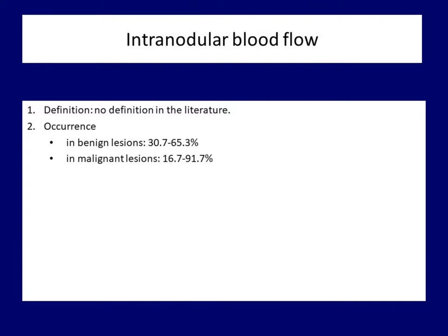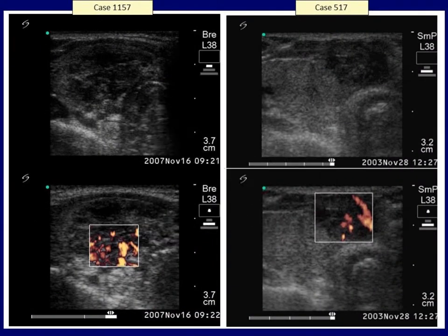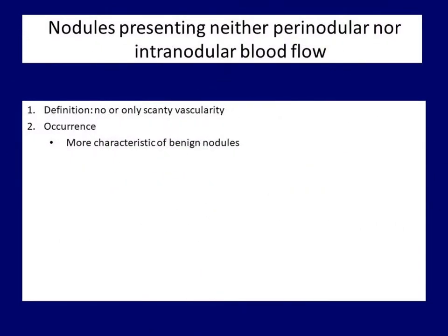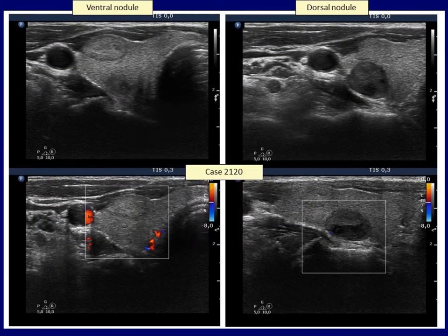The other type of vascularity is the intranodular flow. The huge degree of overlapping between benign and malignant lesions points to the weakness of this sign in differential diagnostics. The first two cases proved to be papillary cancers — in both cases not only is intranodular vascularity present but also markedly and irregularly enhanced. This next nodule also presents increased intranodular flow, but the distribution is more uniform. The third type of vascularity is the complete lack of blood flow within or around a nodule; this pattern characterizes benign nodules.